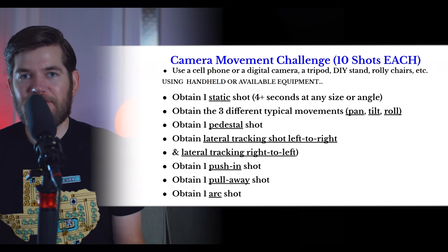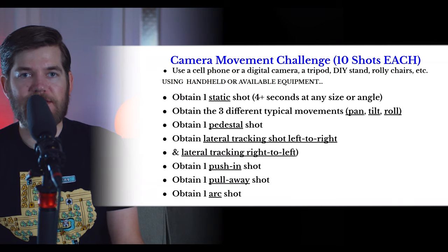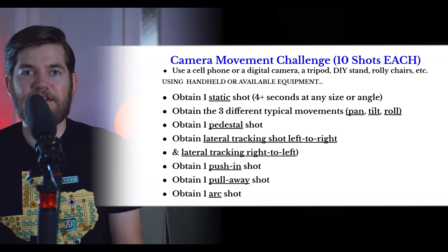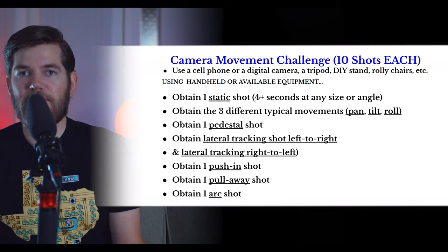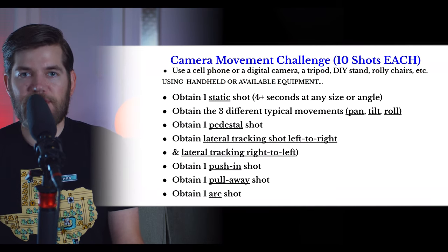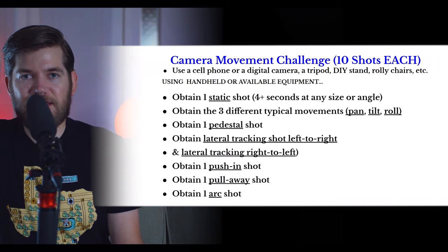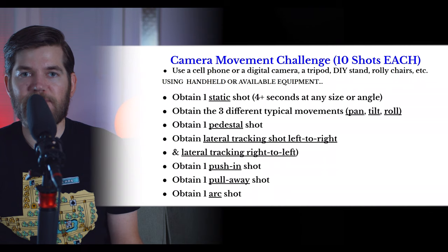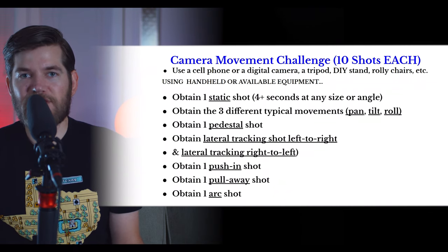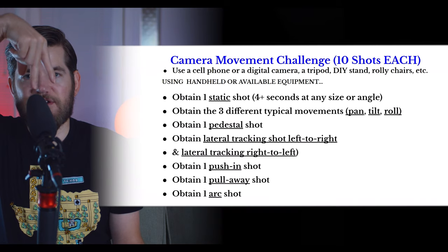Next up we have the lateral tracking shot. I want you to record a lateral tracking shot from left to right and one from right to left, labeled accordingly. To achieve this with handheld methods, make sure when you're walking that you are not stopping with every step — if you do, you will not have continuous movement. You need to do what's referred to as crab walking, where you cross your legs and constantly criss-cross them instead of pausing.